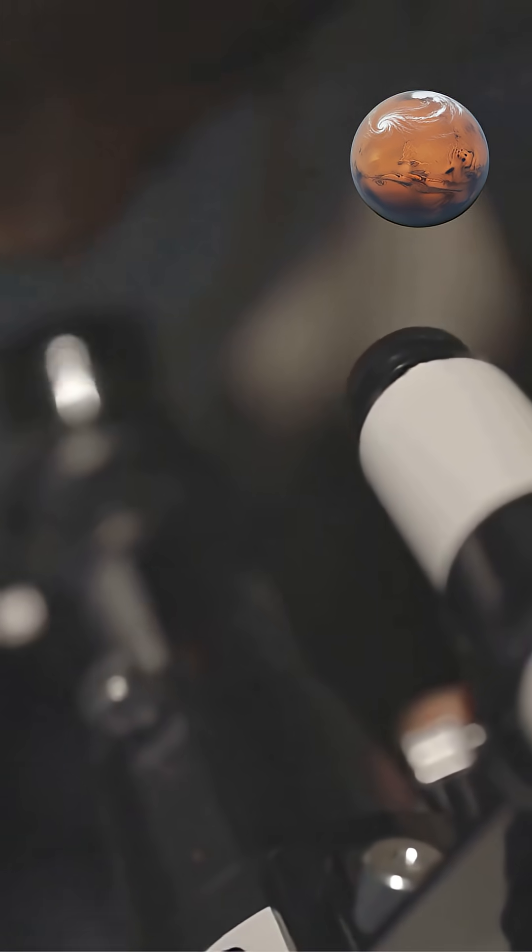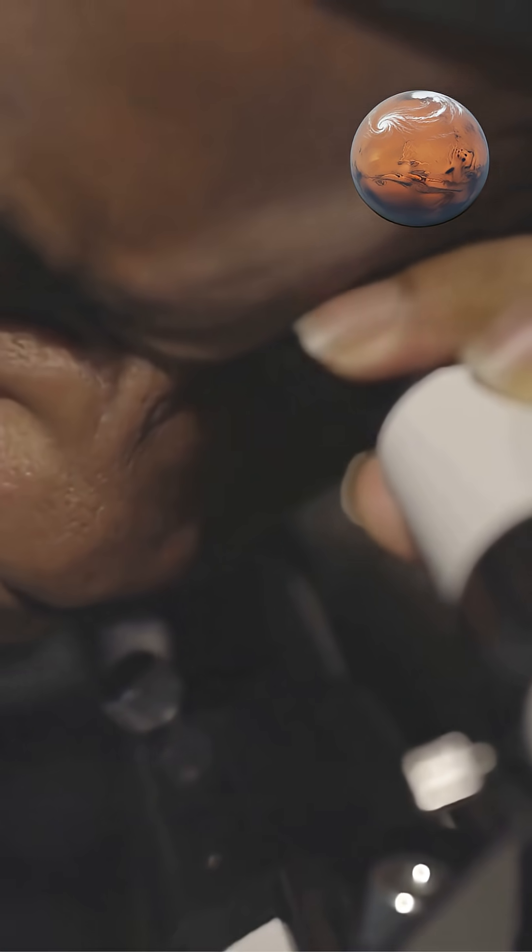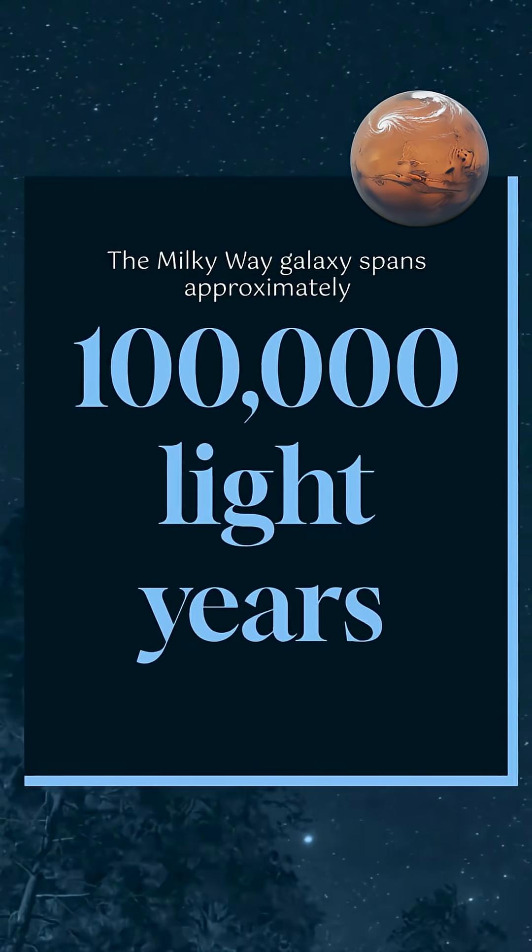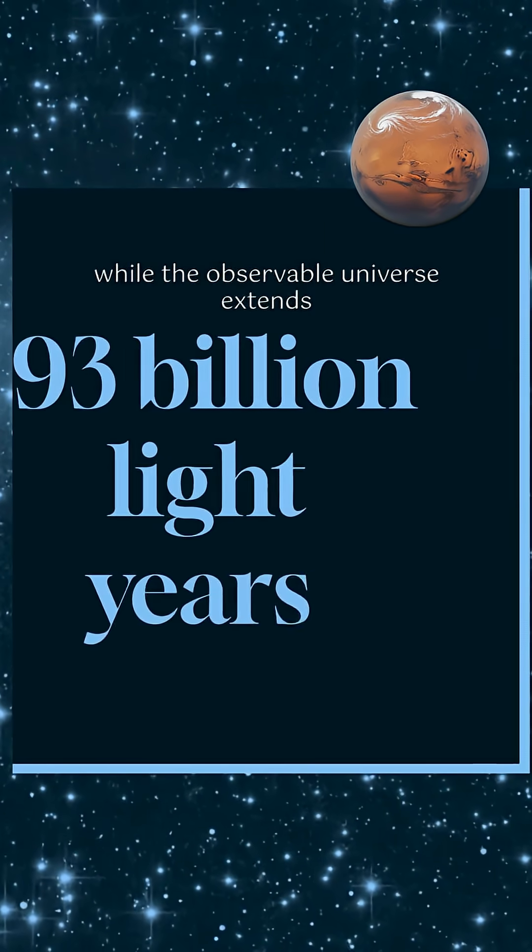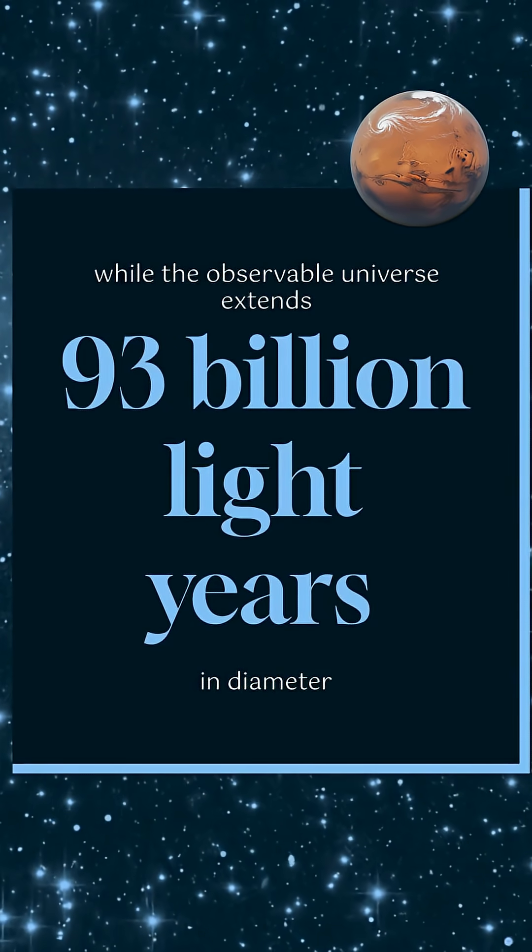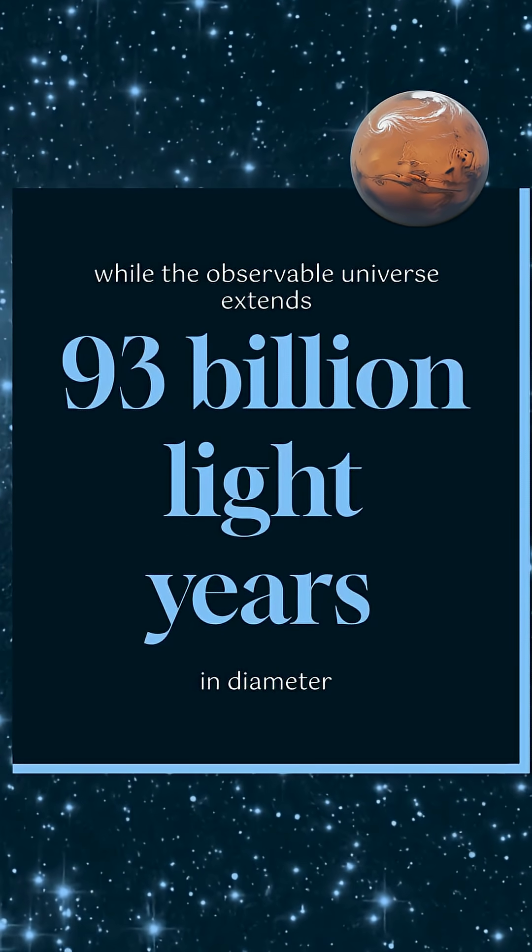Expressing this as 4.37 light years provides a more manageable number that astronomers can easily discuss and compare. The Milky Way galaxy spans approximately 100,000 light years across, while the observable universe extends approximately 93 billion light years in diameter.